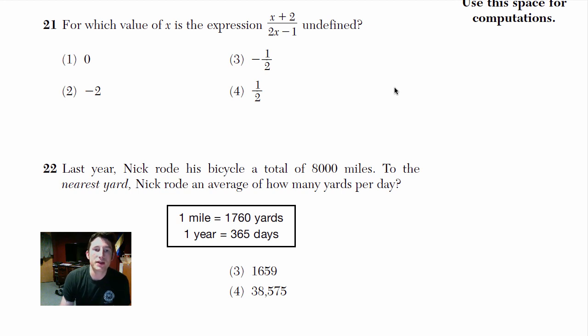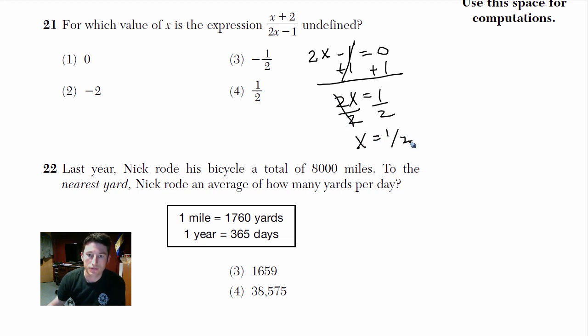This one says for which value of x is the expression x plus 2 over 2x minus 1 undefined. If you want to figure out if any expression is undefined, just set the denominator equal to zero. So we're going to write 2x minus 1 equals zero. And we're going to solve. You can do this in your head really fast. I just like writing things down so as a teacher you can see what I do in my head. And we get x equals one half.